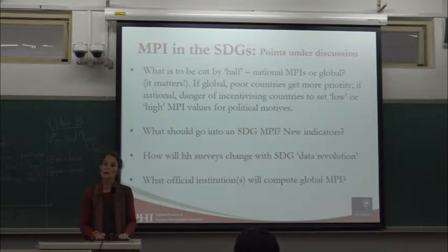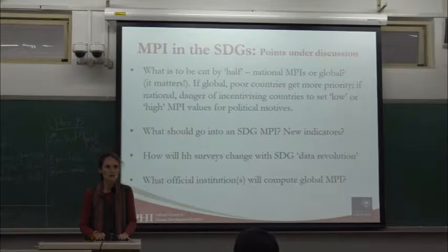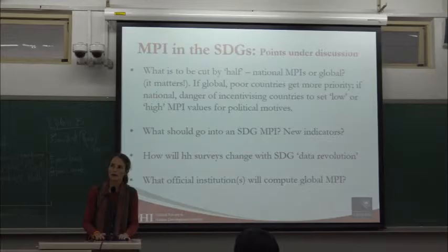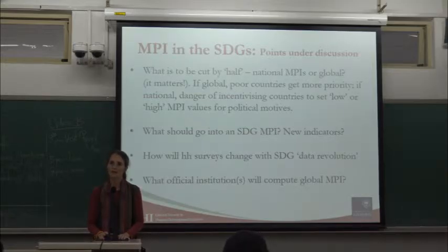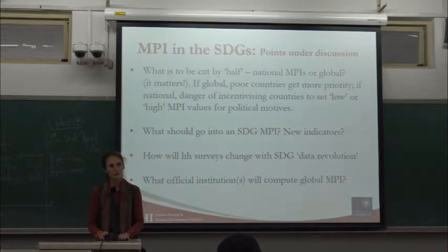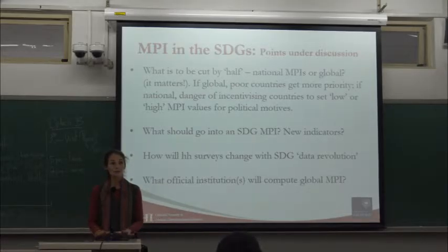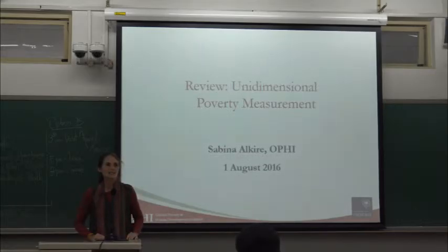Friends who know more than I think we should celebrate that multidimensionality is in the SDGs, that MPI will probably be named the next time a list of indicators comes out, and that the real question is whether the reduction by half applies to national or global measures. There is also a question of what MPIs apply to Europe and OECD countries, but because the $1.90 a day is hardly applied to them, it's not at the moment on our top priority list.